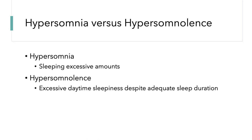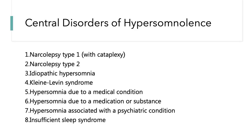When we're talking about hypersomnolence: hypersomnia means you're sleeping excessive amounts, while hypersomnolence is excessive daytime sleepiness despite adequate sleep duration. The central disorders of hypersomnolence include narcolepsy type 1, narcolepsy type 2, idiopathic hypersomnia, Kleine-Levin syndrome, hypersomnia due to a medical condition, substance, or medication, hypersomnia with a psychiatric condition, and insufficient sleep syndrome.